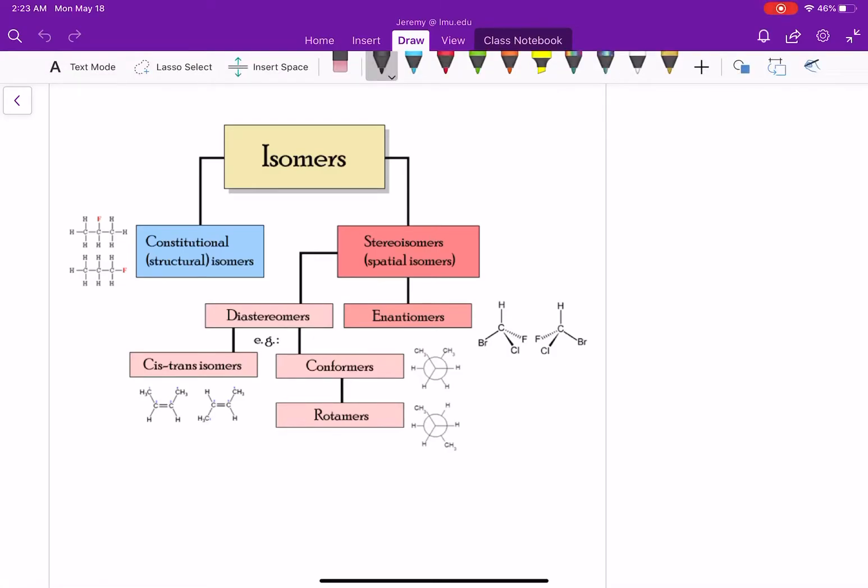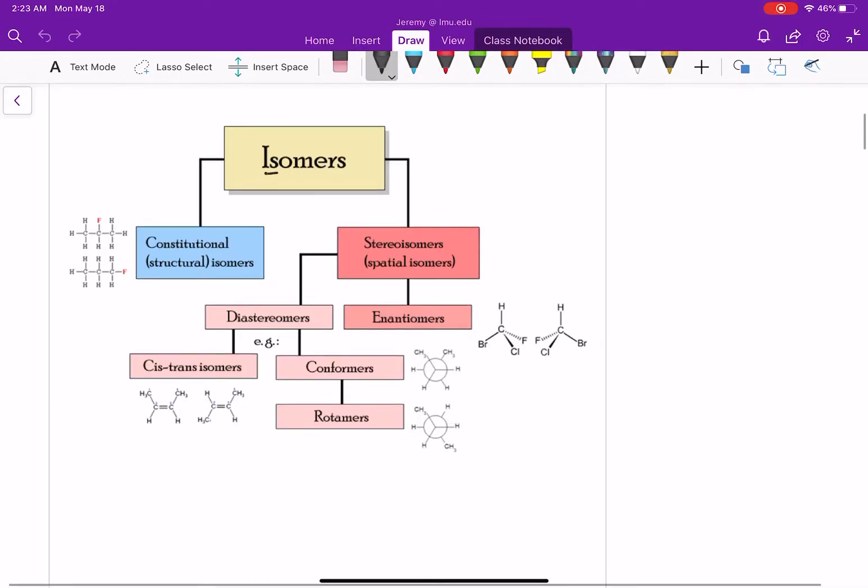Okay, so in this chapter we are going to be talking about isomers. Isomers are structures that have something in common, but then something different.